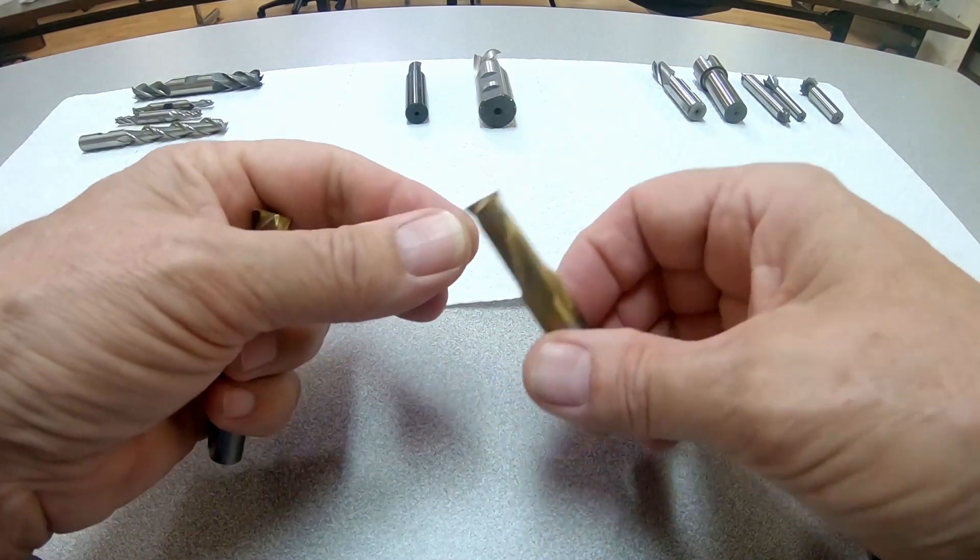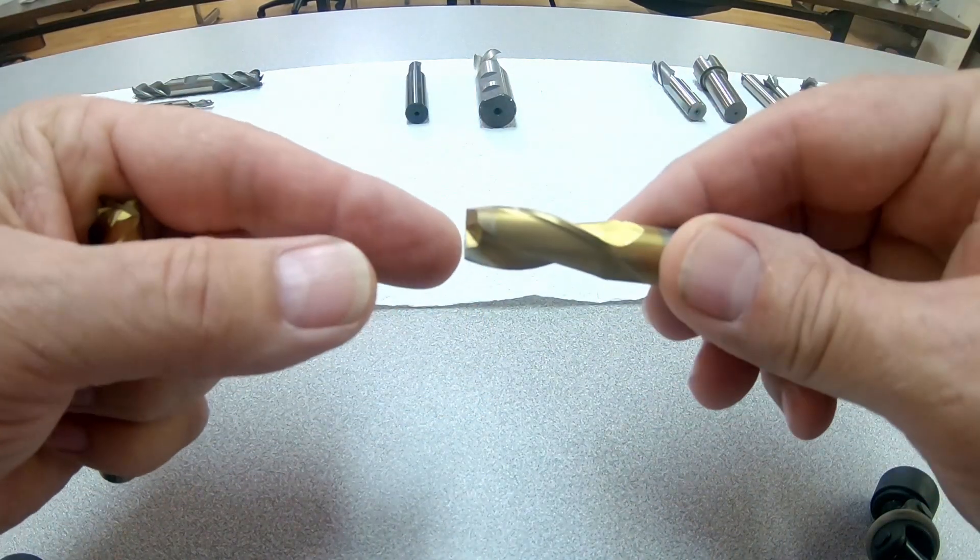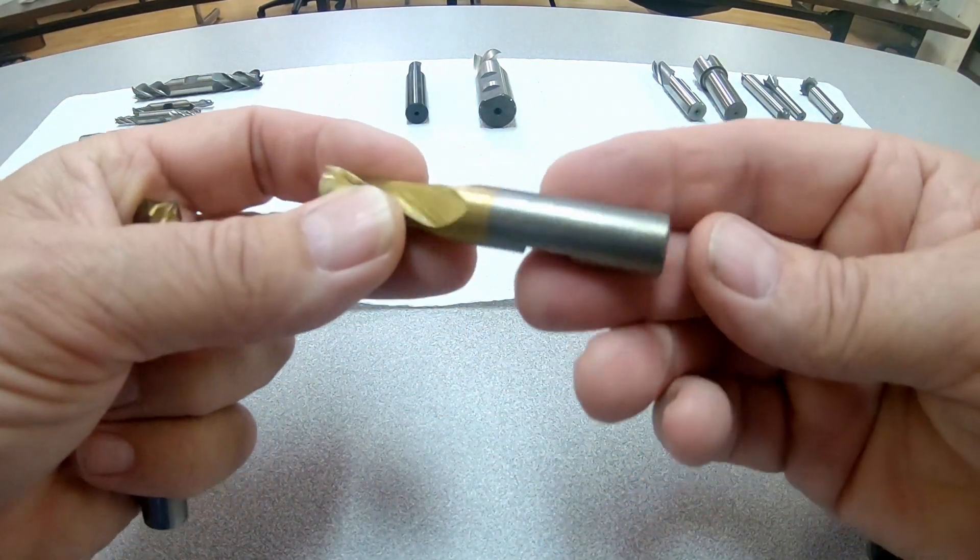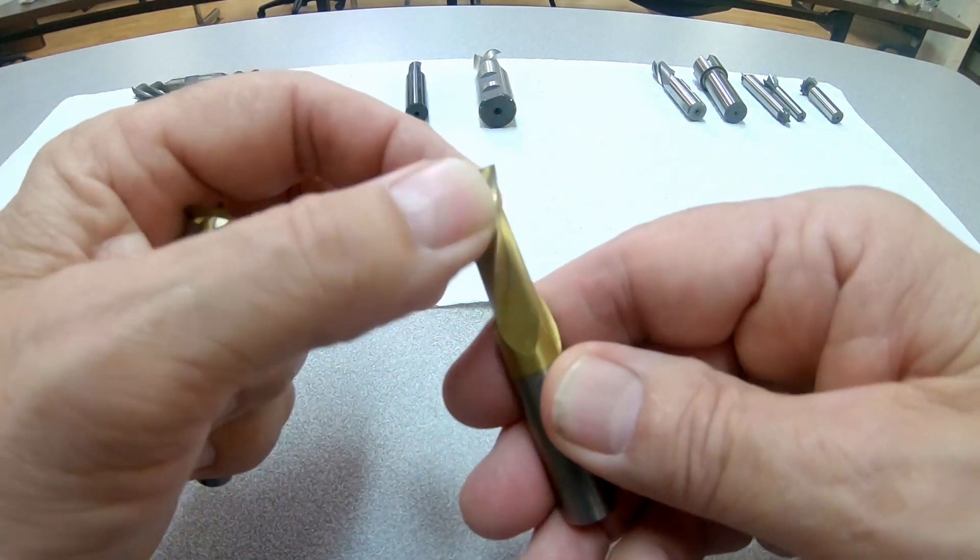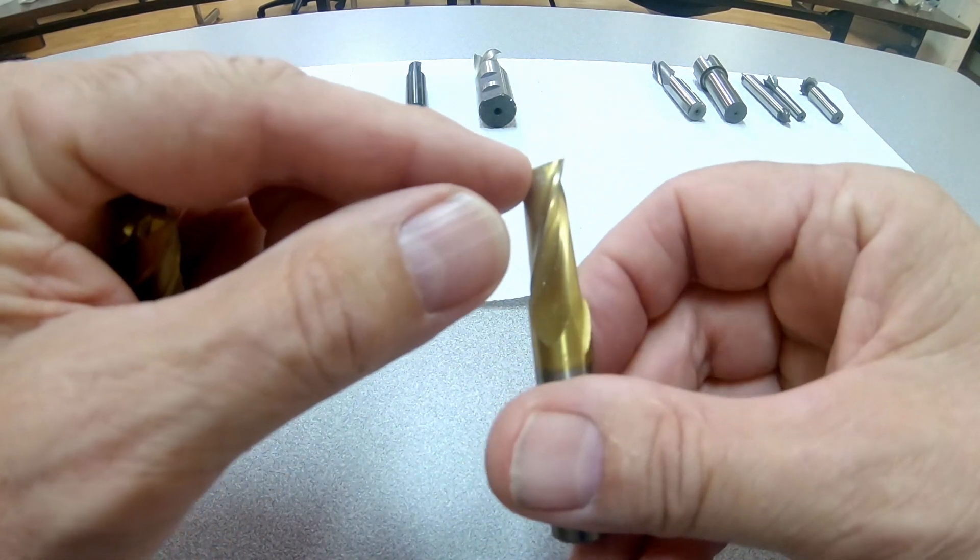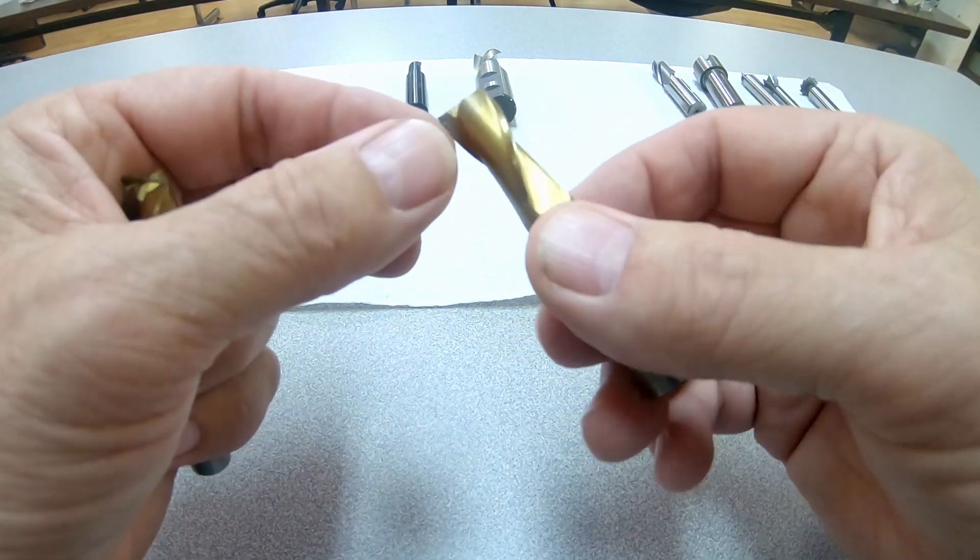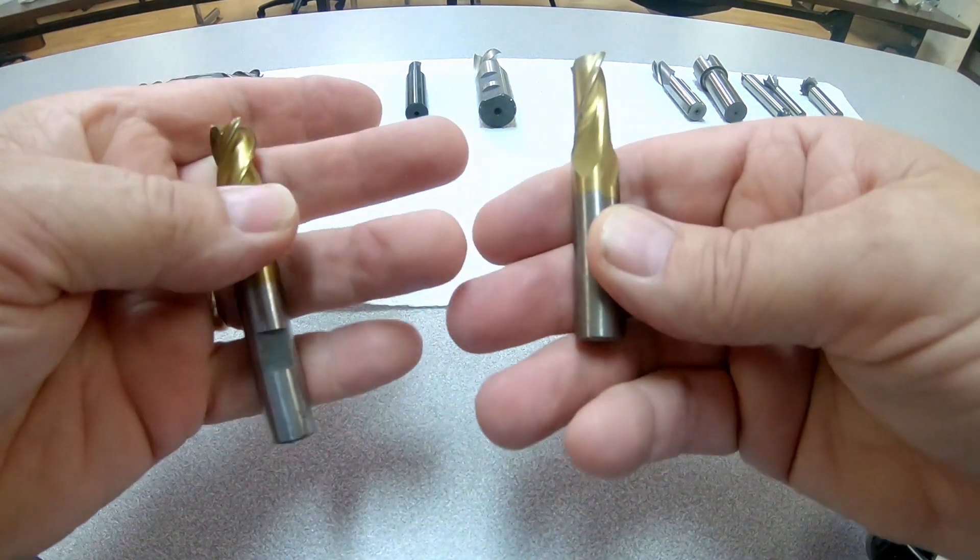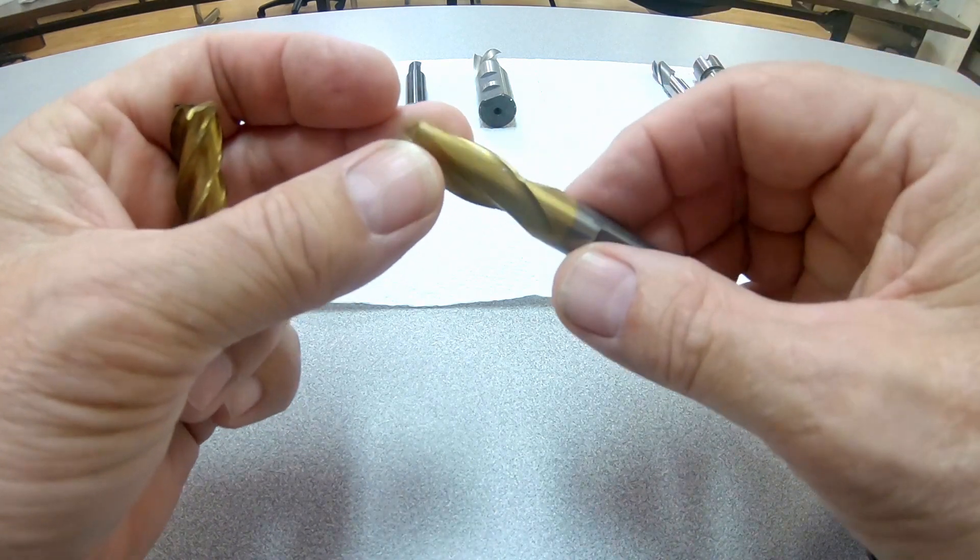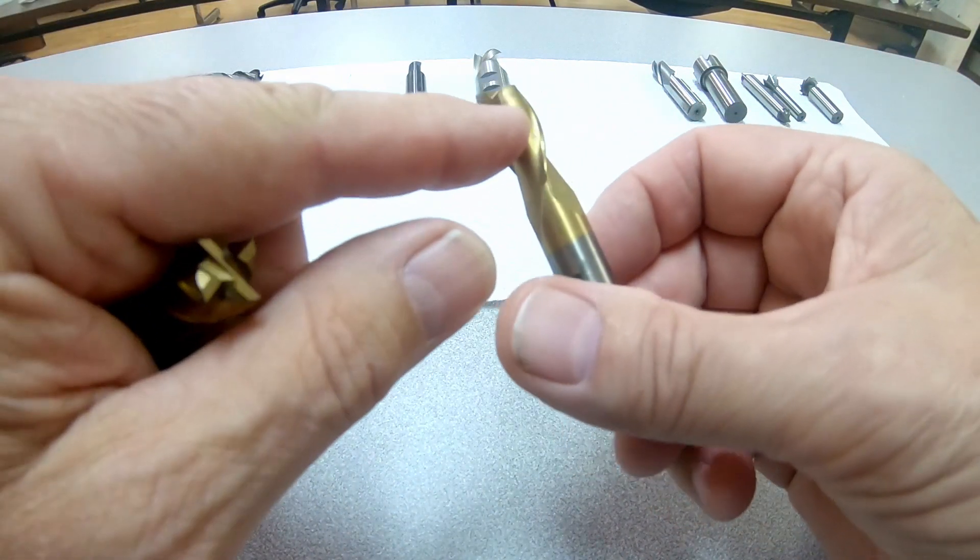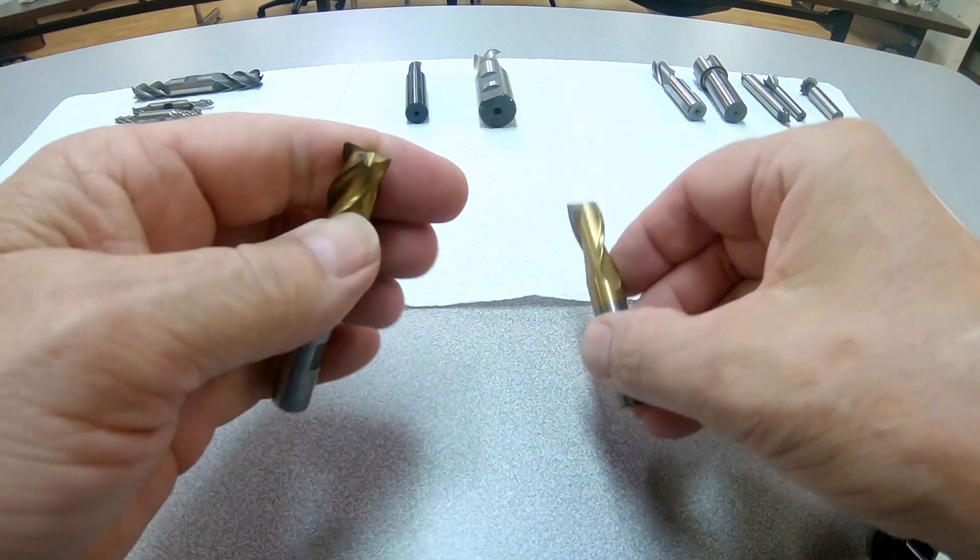This is a two flute end mill. I'll put it up real close. It's center cutting - you can plunge with it, in other words. This is a single ended end mill. We'll talk about double ended here in just a bit. It's TiN coating, which is titanium nitride. That helps the chips slide across the surface a little better. You can see this one's been used a good bit. These have a lot of chip clearance. You can see all the space in here that the chips can clear out. That's the main advantage of these.